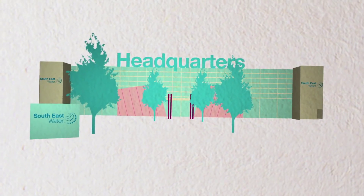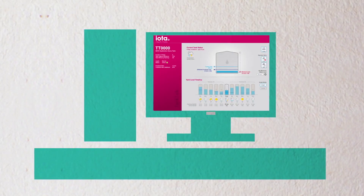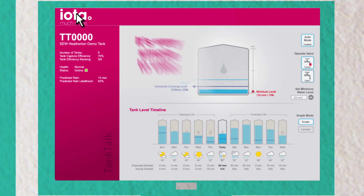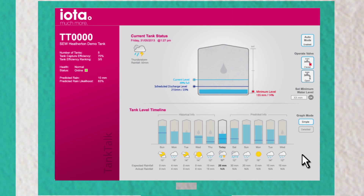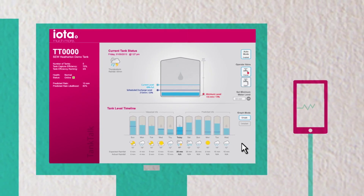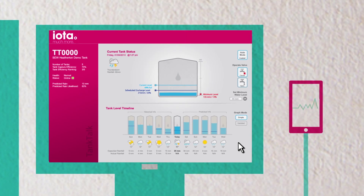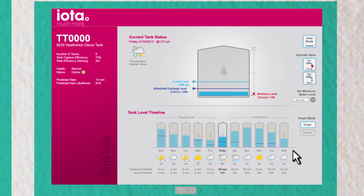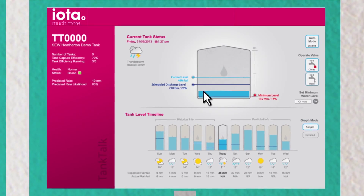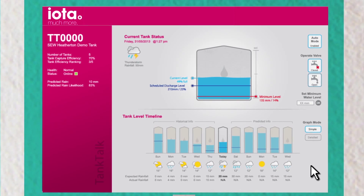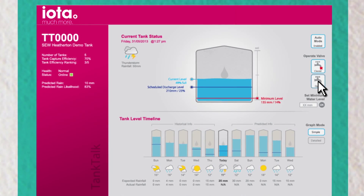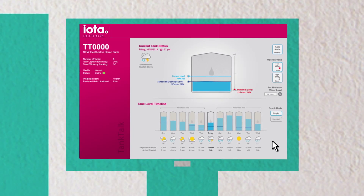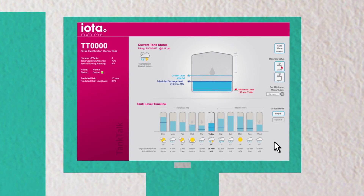TankTalk gives centralised control to stormwater infrastructure owners, such as councils, and it's very simple to use. You can monitor and operate tanks remotely using your internet connection or by using the TankTalk app on your smartphone or tablet. You can monitor and control cumulative capacity in real time, change the collective storage volume at any time, and even manually operate the tank's drain valve, releasing water in dry periods to return flow to creeks and rivers — all at the touch of a button.